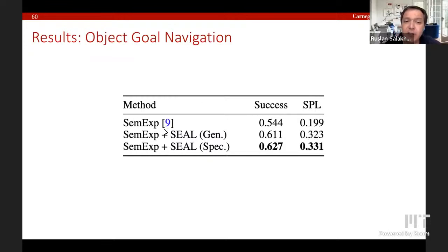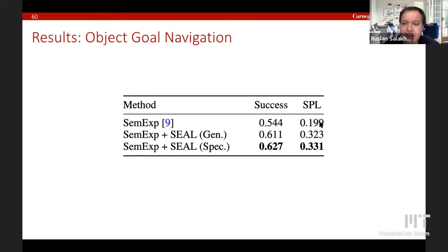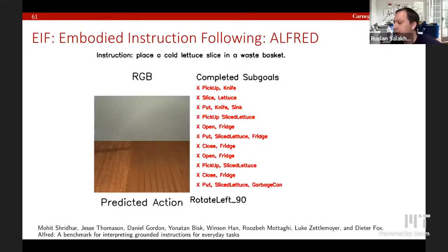We've also applied these algorithms to semantic mapping — not just finding free space but understanding where different objects are and what they represent. Semantic exploration improves results substantially compared to not using it. By learning about the environment through exploration, the numbers increase quite a bit.